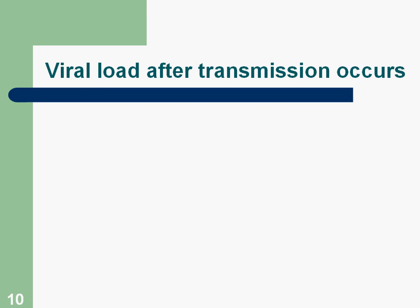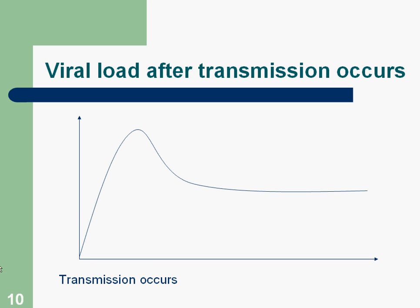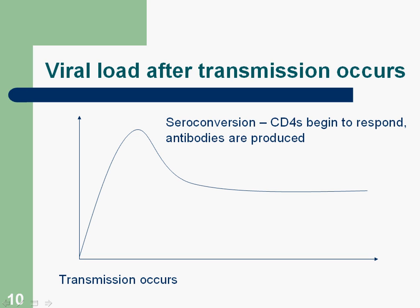The viral load then goes to what is called 'set point,' meaning it stops having such a massive rise. Looking at a graph of viral load after transmission: the horizontal axis represents time and the vertical axis represents the amount of virus in the bloodstream. After transmission, the viral load goes way up, then comes back down and evens out. The point at which it starts to come down is seroconversion, when CD4 cells begin to respond and antibodies are produced. That leveled-off amount is the viral load set point.